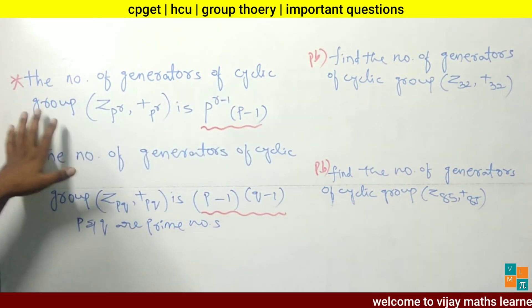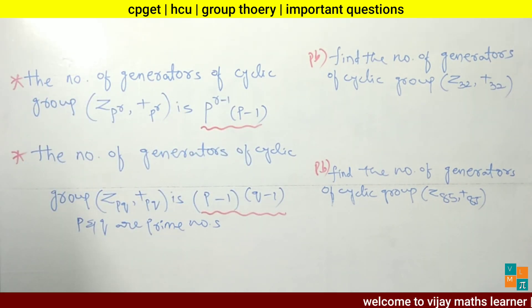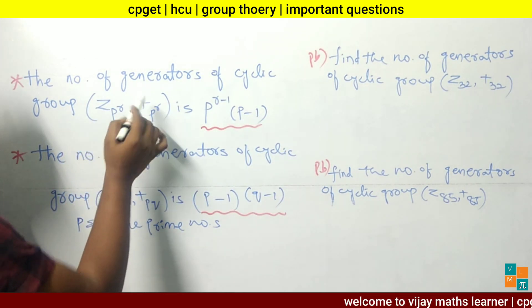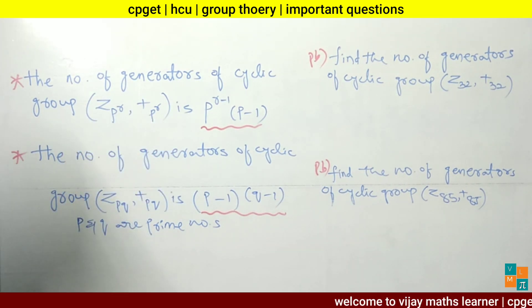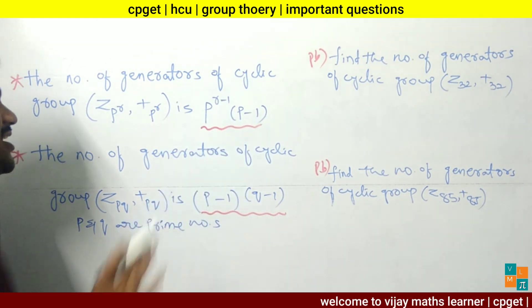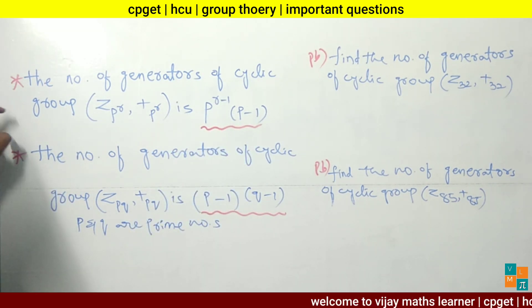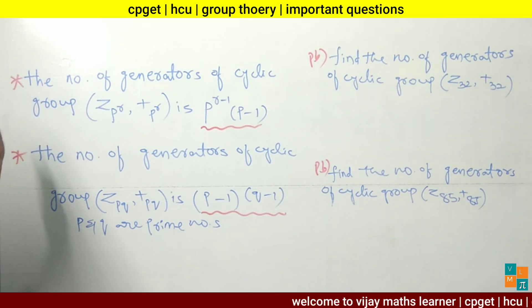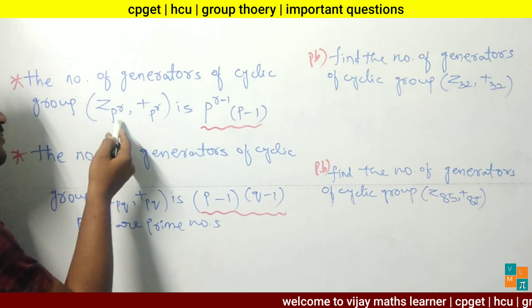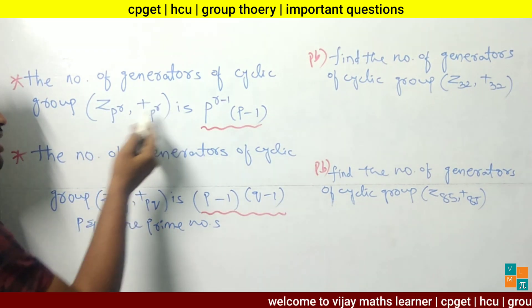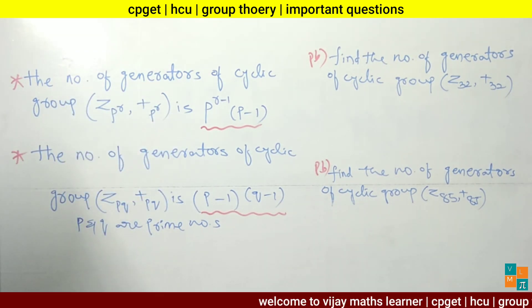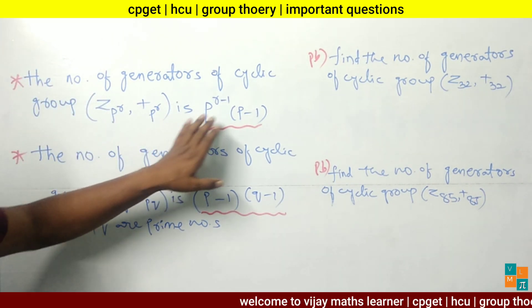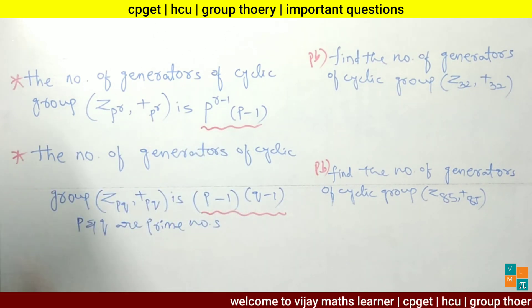Now let's look at the first result: the number of generators of a cyclic group. If the group is Z(p^r) with addition modulo p^r, where p is a prime number, then the number of generators of the cyclic group is p^(r-1) into (p minus 1). This is an important result.